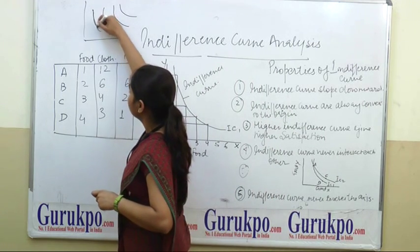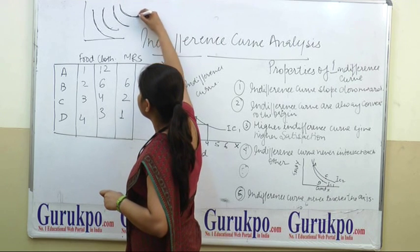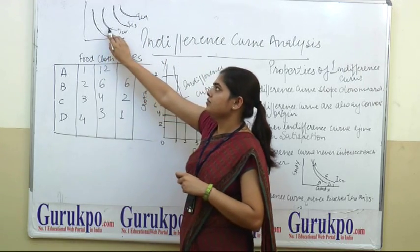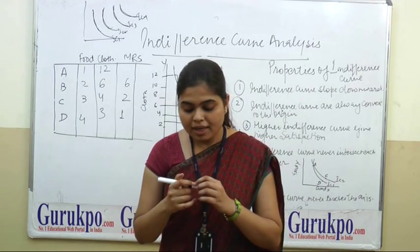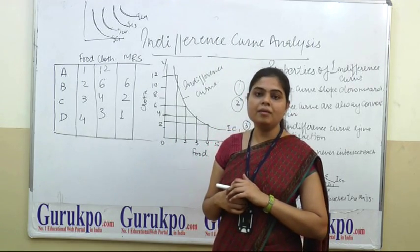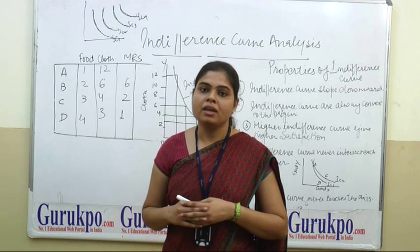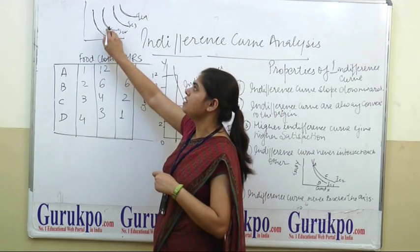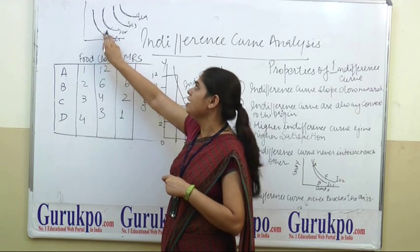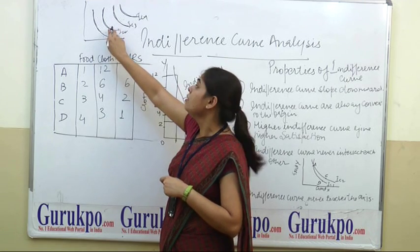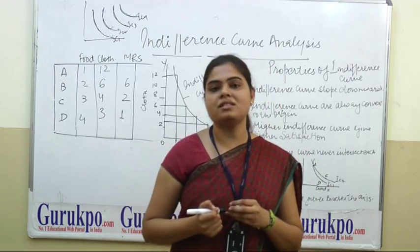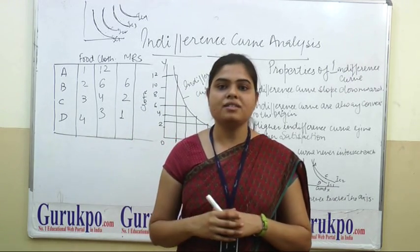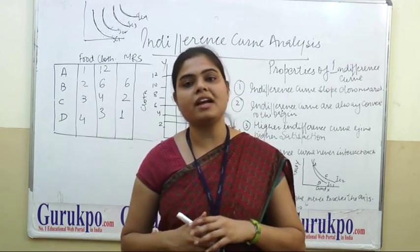On the indifference map, there are various indifference curves — IC1, IC2, IC3, and IC4. A higher indifference curve gives higher satisfaction because the consumer consumes more quantity and is ready to make more combinations of goods. When he consumes more quantity, he finds greater satisfaction. So IC2 gives more satisfaction than IC1, IC3 gives more satisfaction than IC2, and IC4 gives more satisfaction than IC3. Because of this reason, no two indifference curves intersect with each other.